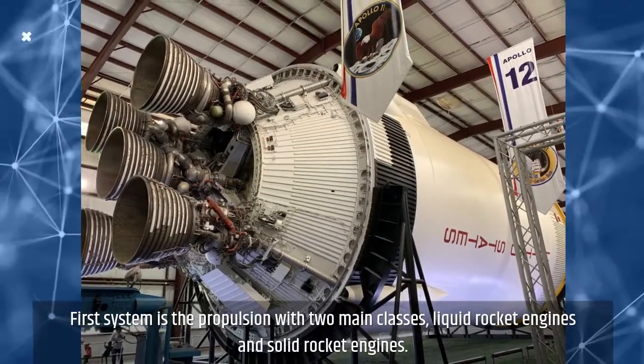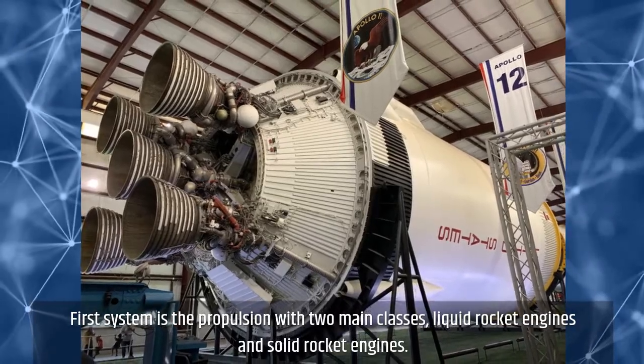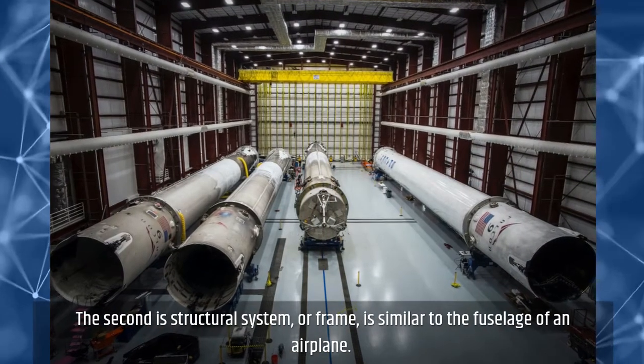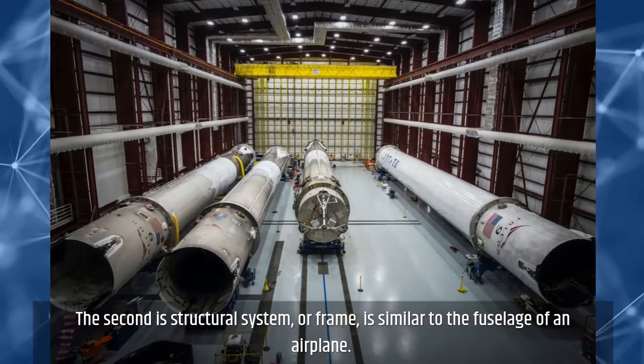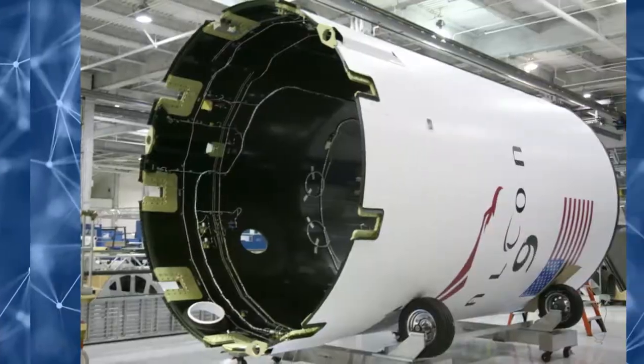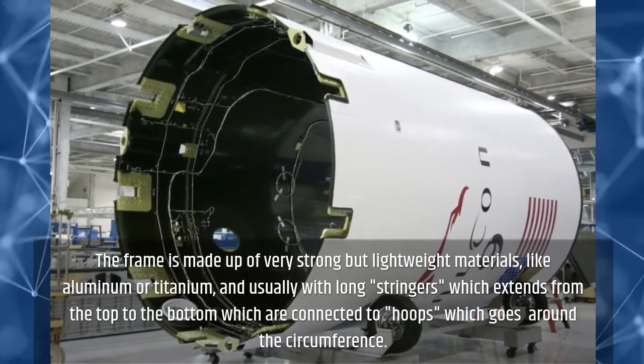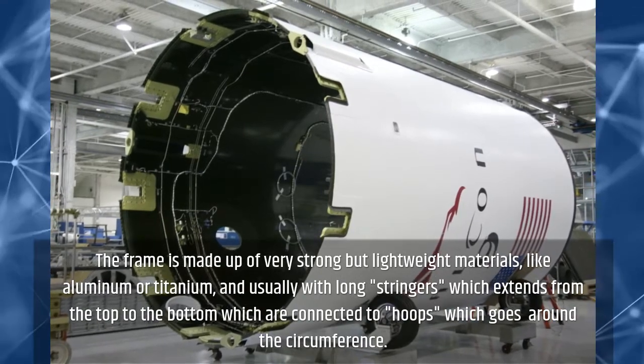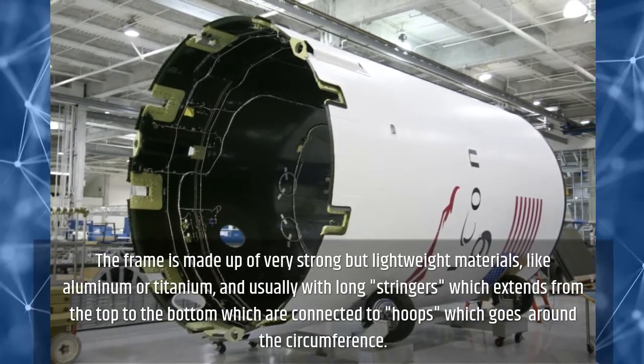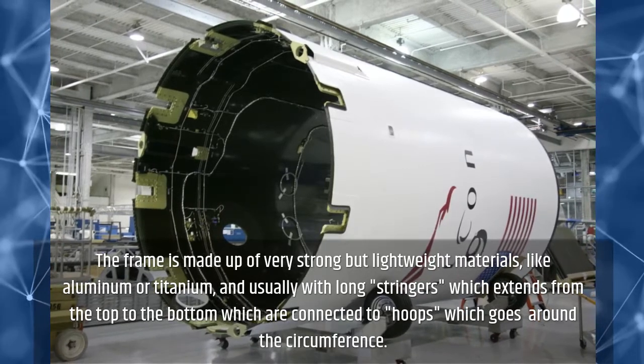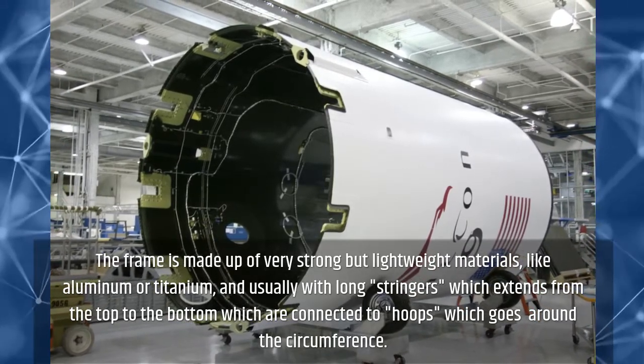The frame is made up of very strong but lightweight materials, like aluminum or titanium, and usually with long stringers which extend from the top to the bottom, connected to hoops which go around the circumference.